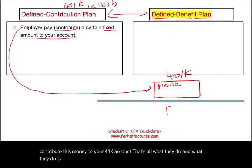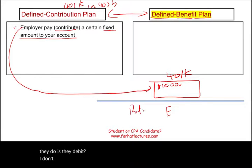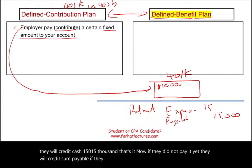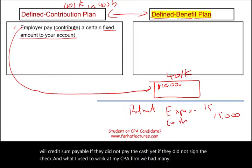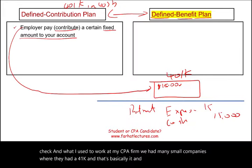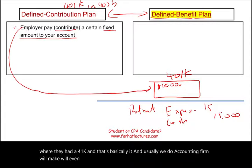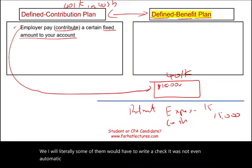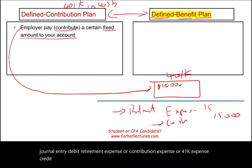The journal entry is: debit retirement expense — or contribution expense, or 401k expense — and credit cash for $15,000. If they haven't paid yet, they would credit a payable instead. When I used to work at my CPA firm, we had many small companies with a 401k, and we would literally write the check and make the journal entry: debit retirement expense, credit cash. That's a defined contribution.